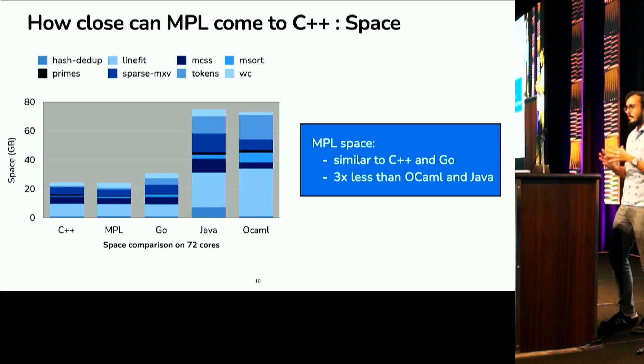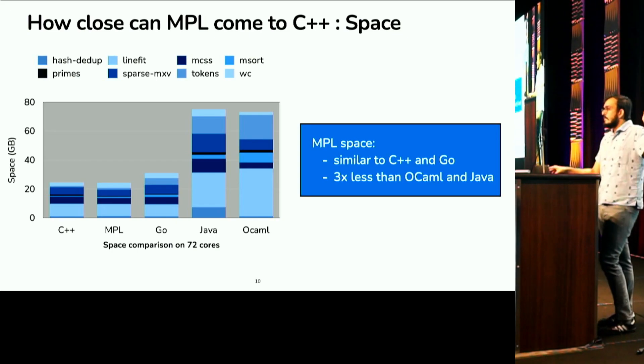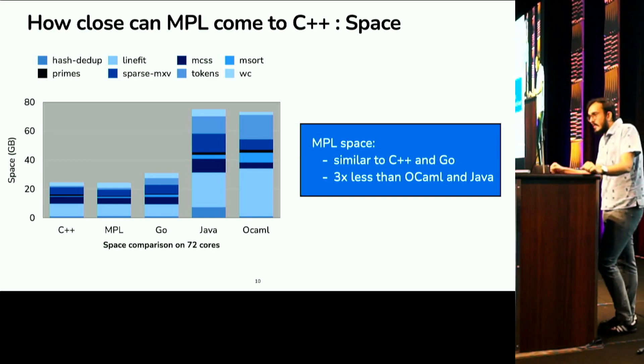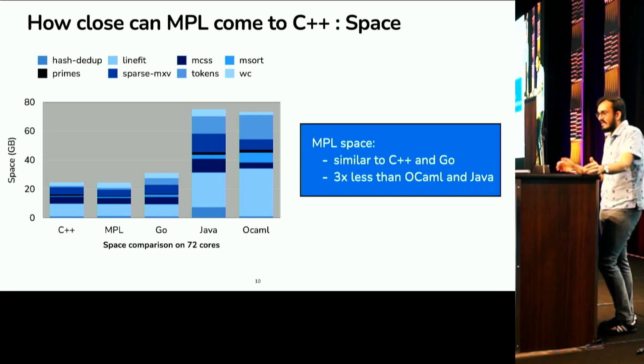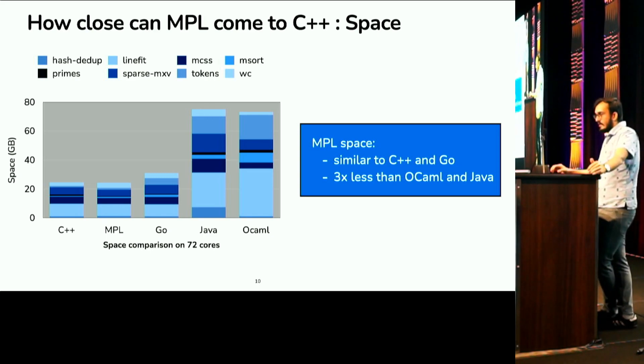Let's also look at the space numbers to get a full picture. So, the idea is the same. On the y-axis, I plot the space it takes to run all the benchmarks and the x-axis are the languages. And we see that Maple space comes really close to C++ and Go. Which is great because it tells us the parallel garbage collector is collecting all of the allocations that this functional language makes. And Maple space is also less than 3x OCaml and Java.